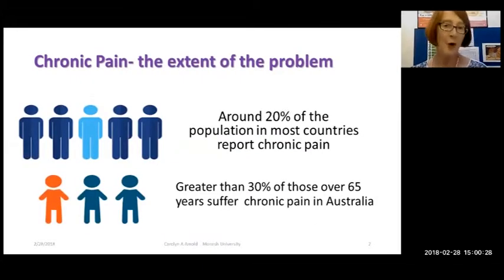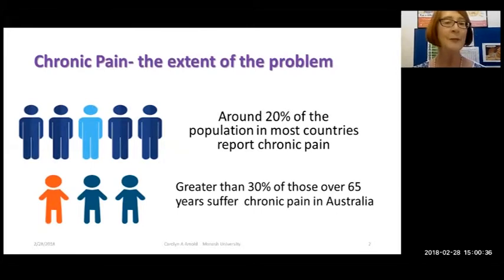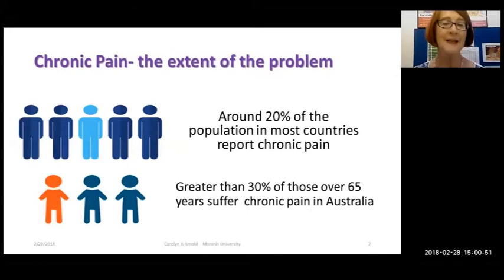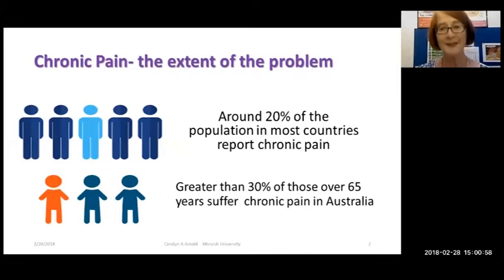If we're going to talk about chronic pain, we need to be aware of just what is the extent of the problem. Around Australia and the world, about 20% of people of working age experience chronic pain. Within that group, it's probably about 25% of that 20% who are severely disabled and impaired in function, and they are the people we're more likely to see seeking medical treatment. There are many people who, by definition, have chronic pain but actually function quite well despite it.